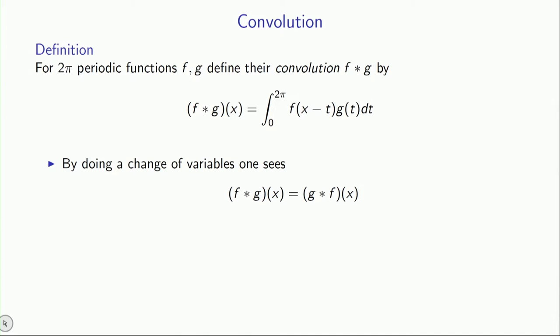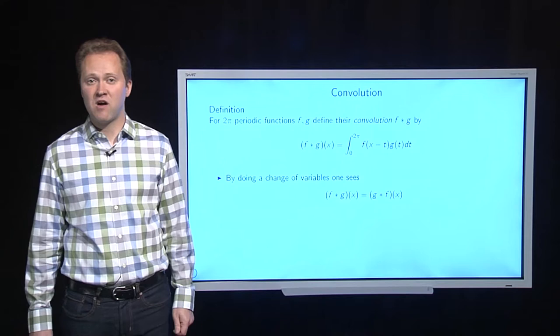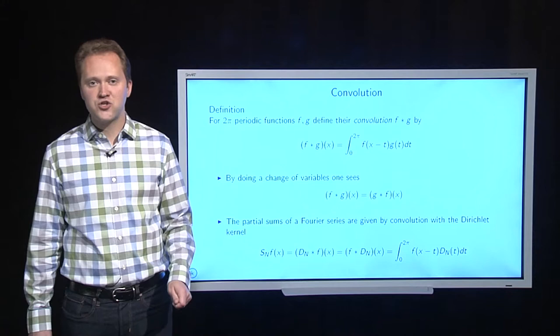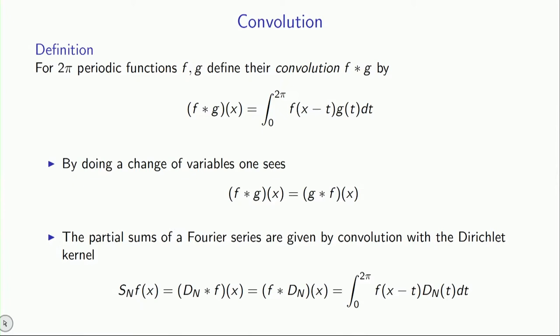And one of the nice things about convolution is that it doesn't matter which order you do it. Maybe you should pause the video and see if you can do a change of variables to obtain that identity, that the order does not matter. Now, without wanting to go too much into detail about all the wonderful properties of convolutions, which are very important in analysis, then let me just say that the partial sums for Fourier series are actually given as convolutions where you convolve your function with the Dirichlet kernel. And so if you go back a couple of slides,